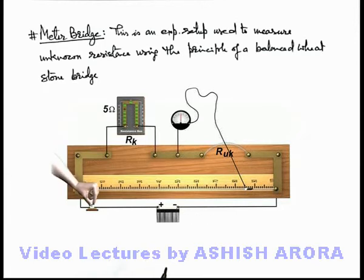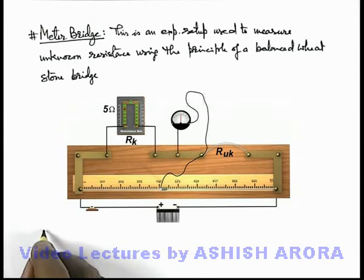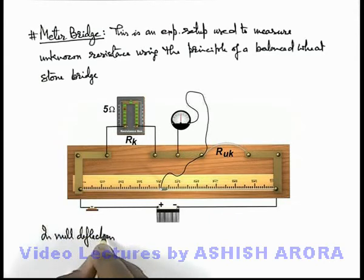Now if we close down the key, we can see a deflection in the galvanometer. We can slide this jockey on the wire and locate a point where galvanometer will show null deflection. In the situation of null deflection, the Wheatstone bridge is balanced, or we can say this is the null deflection state.